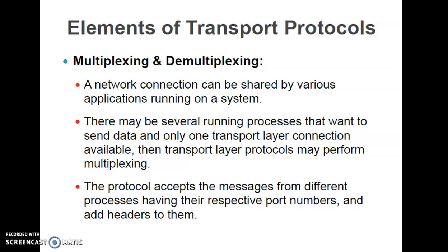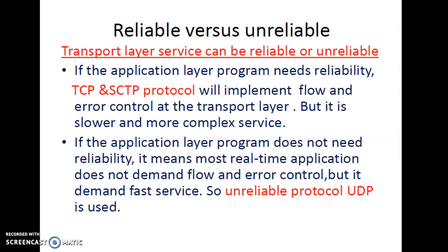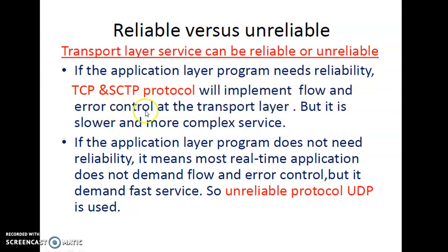The transport layer service can be reliable or unreliable. When using TCP or HTTP under connection-oriented service, it is reliable. When using connectionless service such as UDP, it is unreliable. If you need a reliable connection, use connection-oriented service; if you need fast but unreliable service, use UDP. If an application needs reliability, TCP implements flow control and error control at the transport layer, but the drawback is that it is slower and more complex.